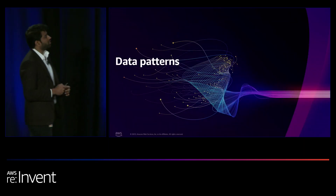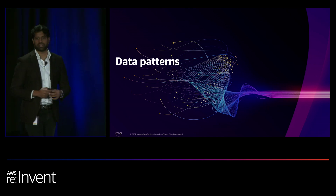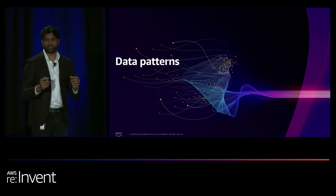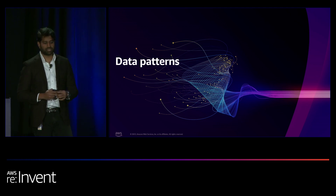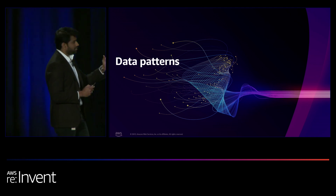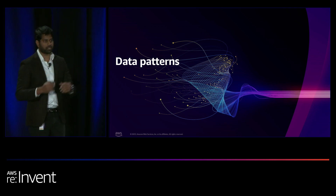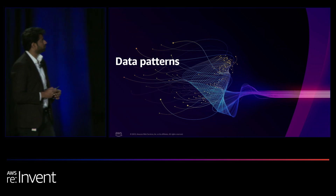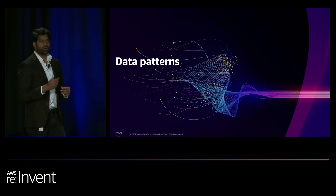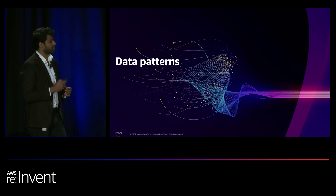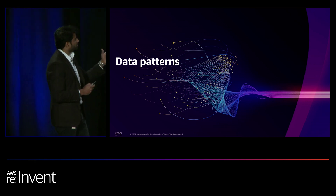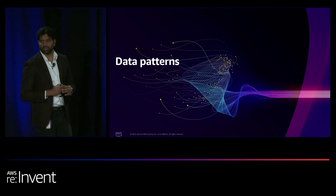We have touched upon modern data strategy. Let's check what data patterns are. Data patterns refer to the underlying structures and relationships that exist within datasets. In modern data strategy, analyzing these patterns is vital for understanding your data and making data-driven decisions. How do we migrate your workload to AWS to do such analysis? We'll understand various data patterns. But do we have enough materials or resources — like runbooks and technical references — to understand these data patterns? That's what we are going to discuss today.